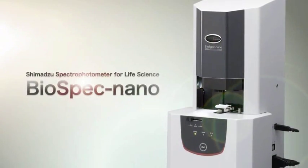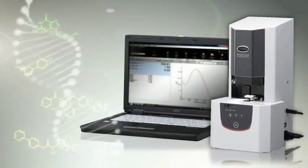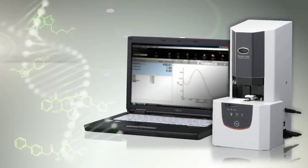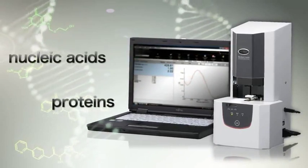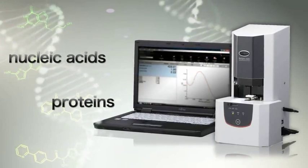SHIMAZU SPECTROPHOTOMETER FOR LIFE SCIENCE BIO-SPEC NANO. The BIO-SPEC NANO is a spectrophotometer suitable for quantification of nucleic acids and proteins, as well as for general photometric determinations of other analytes.